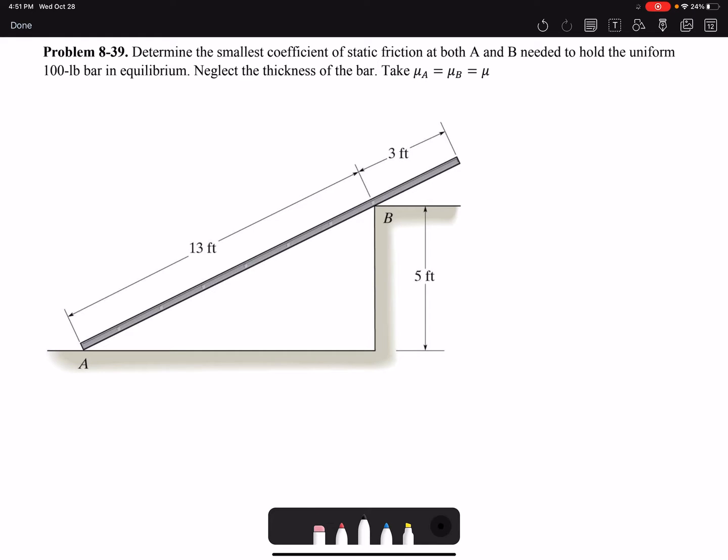The first step is to draw a free body diagram. If I draw the free body diagram here, I have the bar. I have the weight of the bar which is 100 pounds. The total length of the bar